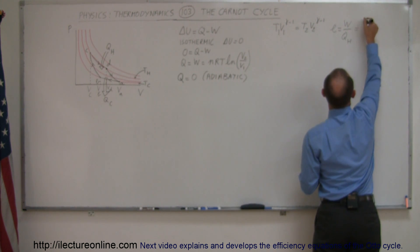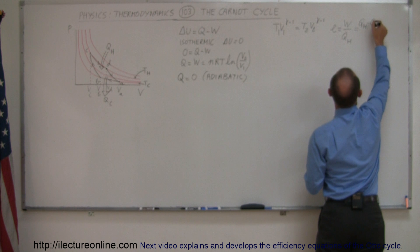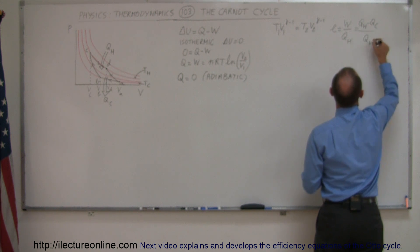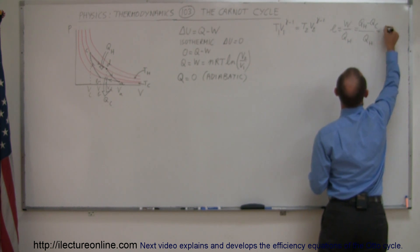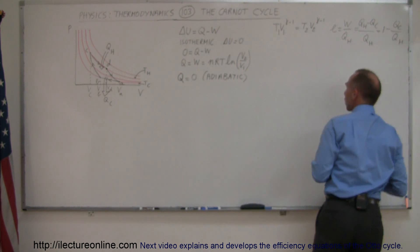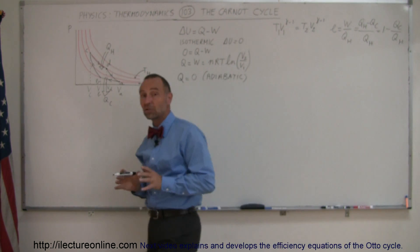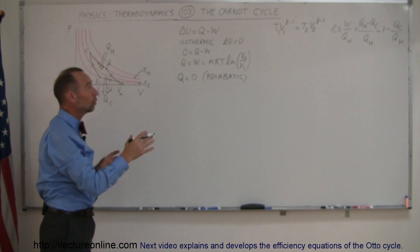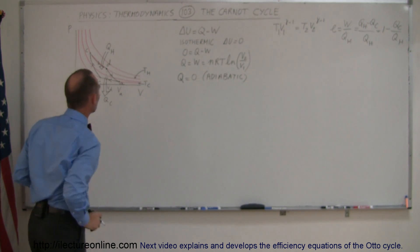Remember the equation for efficiency: efficiency is equal to work done divided by the heat that you derive from the hot reservoir. And work done can be written as Q_hot minus Q_cold divided by Q_hot. And if you divide this into that, you get 1 minus Q_cold divided by Q_hot. So what we want to do here is come up with an equation where we're going to divide Q_cold by Q_hot somewhere in this process.